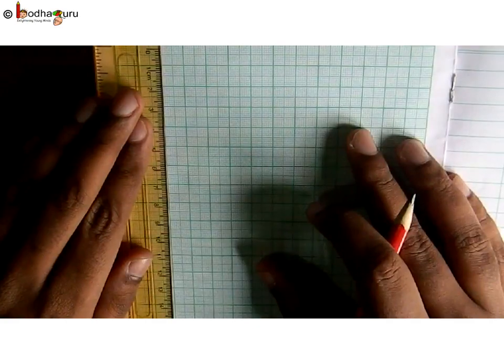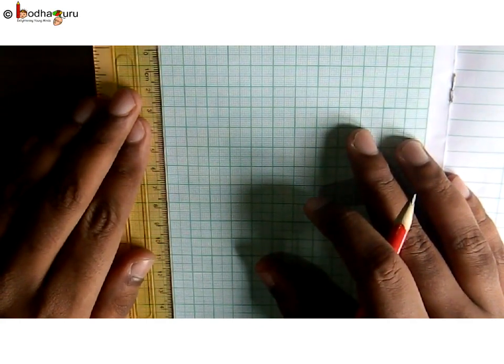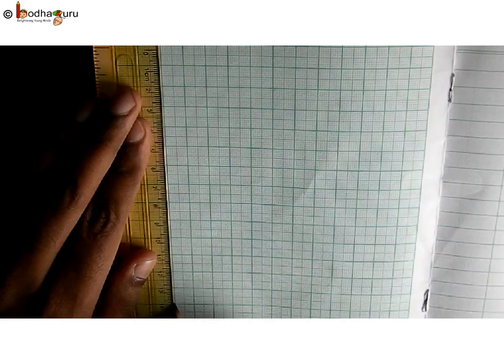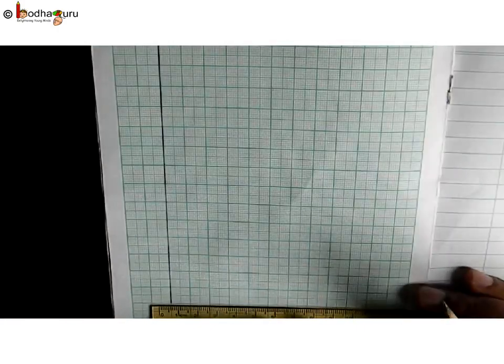Now, we label the x-axis for time in minutes and the y-axis for speed in km per hour. Time-wise, we have data till 7 minutes only.